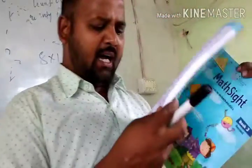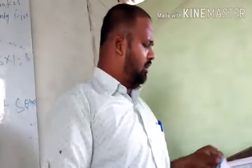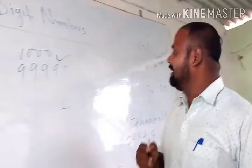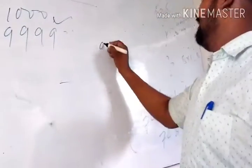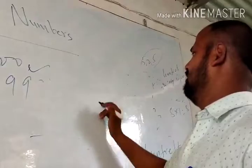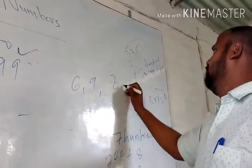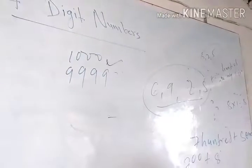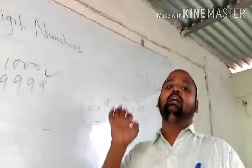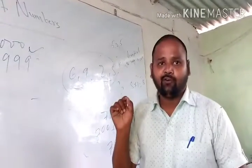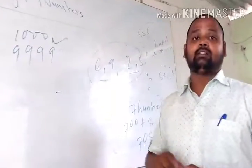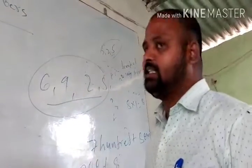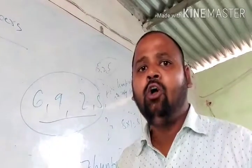अब हमारा next topic होगा forming numbers। Forming numbers में अलग-अलग digits होएंगे — मान लीजिए 9, 6, 5, 2। Without the repetition of any number, you have to form a 4-digit largest number using these digits. इन digits की मदद से 4-digit का सबसे बड़ा number बनाना है।